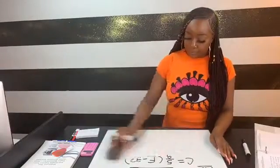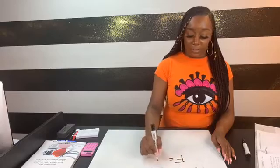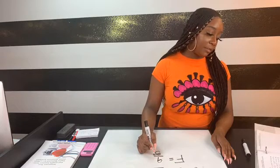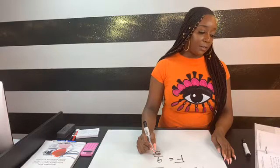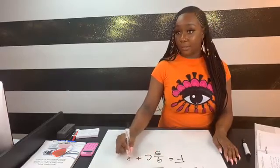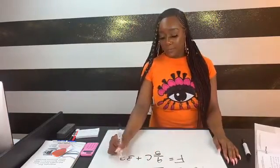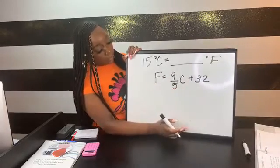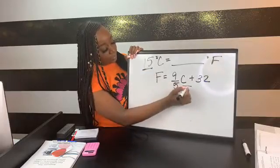Let's turn it around and go from Celsius to Fahrenheit. Let's say I have 15 degrees Celsius and I want to figure out how many degrees Fahrenheit that is. I know Fahrenheit is going to be nine-fifths times degrees Celsius plus 32. We're going to take our 15 and we're going to substitute it in for C.